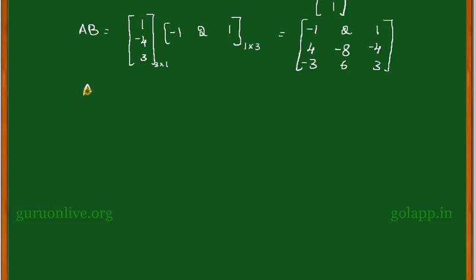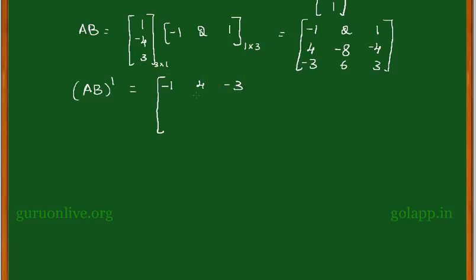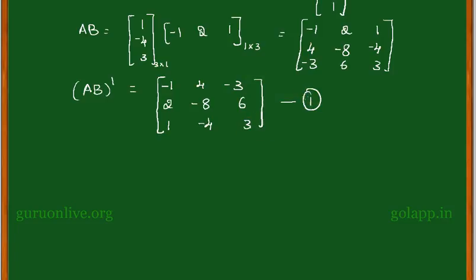Now take the transpose of AB. So (AB) whole transpose is obtained by interchanging rows and columns, giving the matrix with columns [-1, 4, -3], [2, -8, 6], [1, -4, 3]. This is the LHS. Call this equation 1.